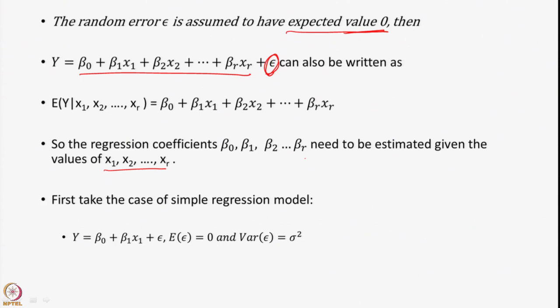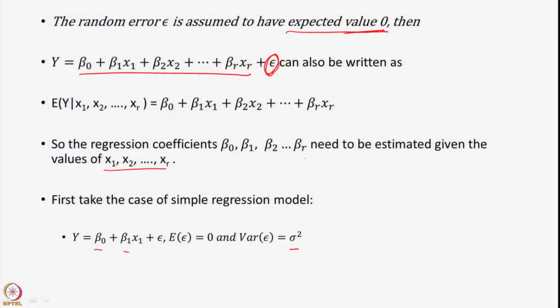We will discuss in detail the estimation procedure for β₀, β₁, and σ², which is the variance of ε, through the case of simple regression: y = β₀ + β₁x₁ + ε. We assume the variance of ε is σ², and the expected value of ε is 0.